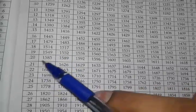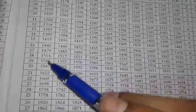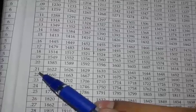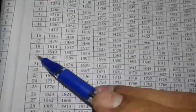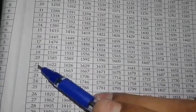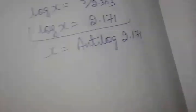Where it is 0.171. If you want to find the antilog of 2.171, you should take the value of 0.171.